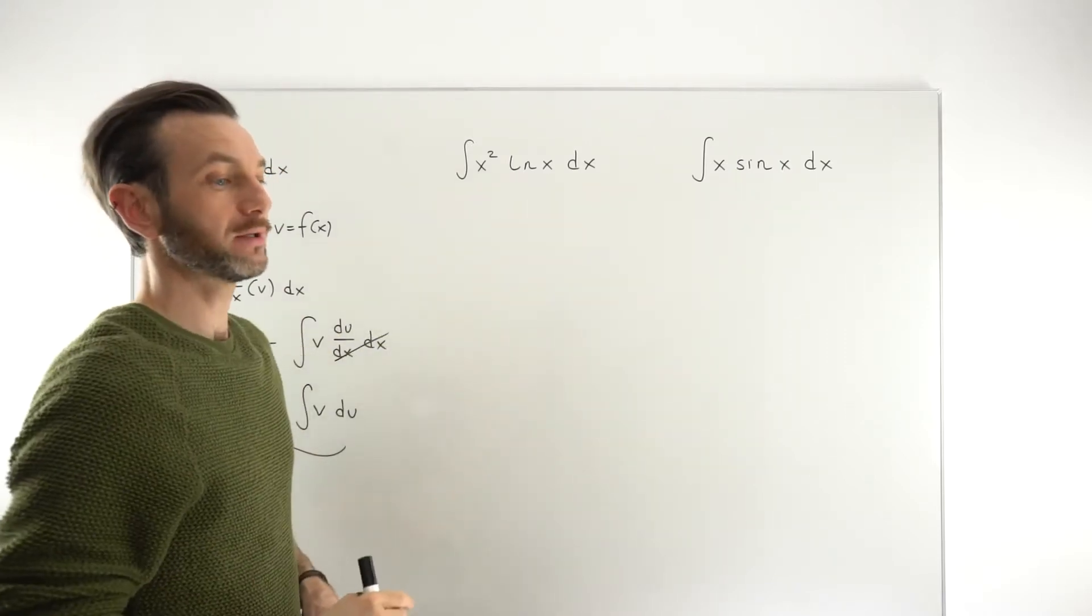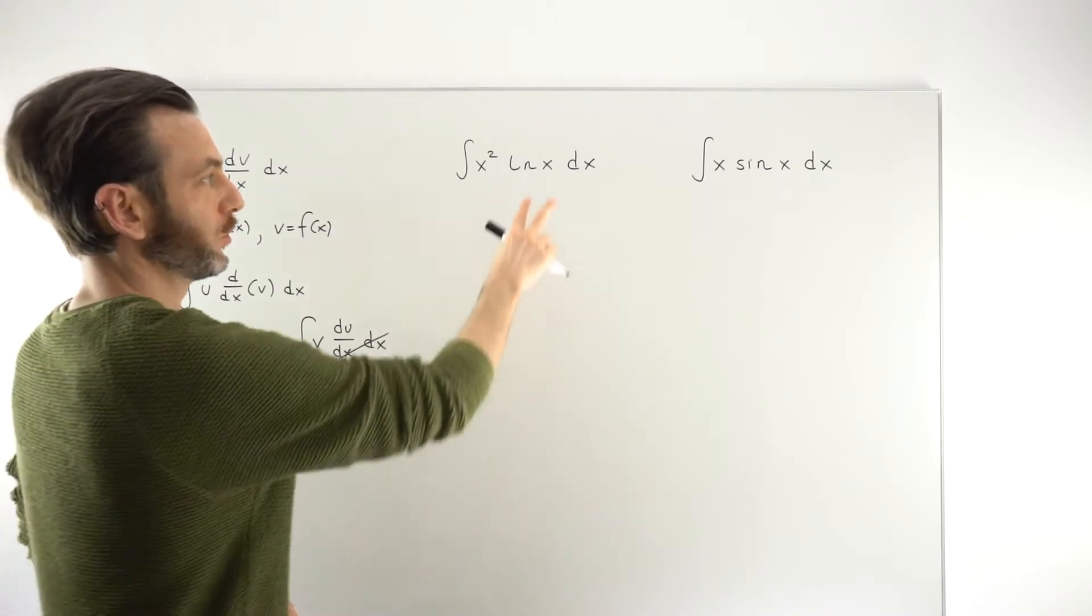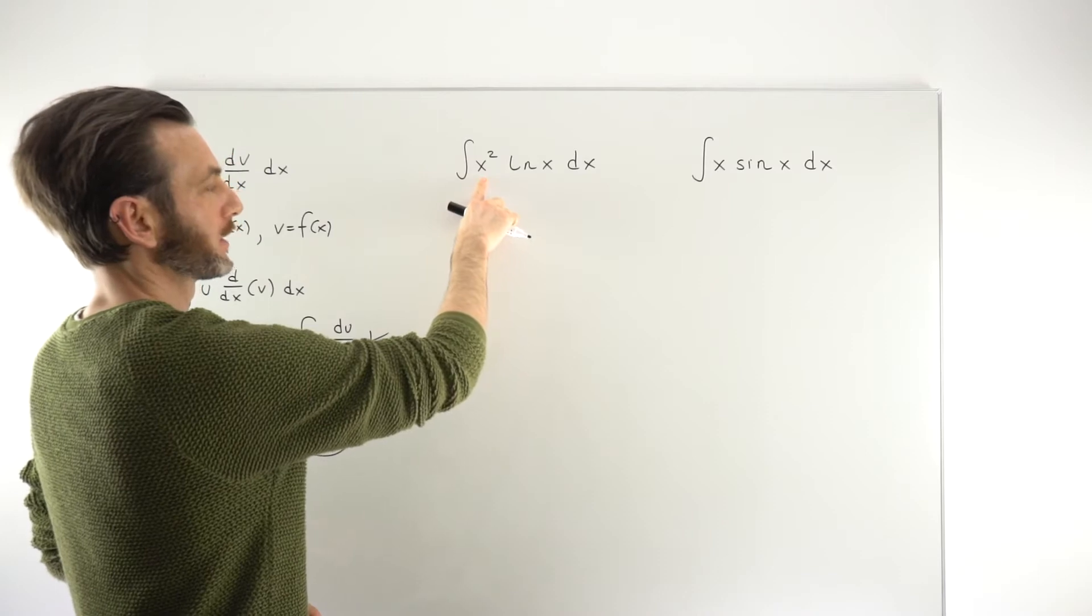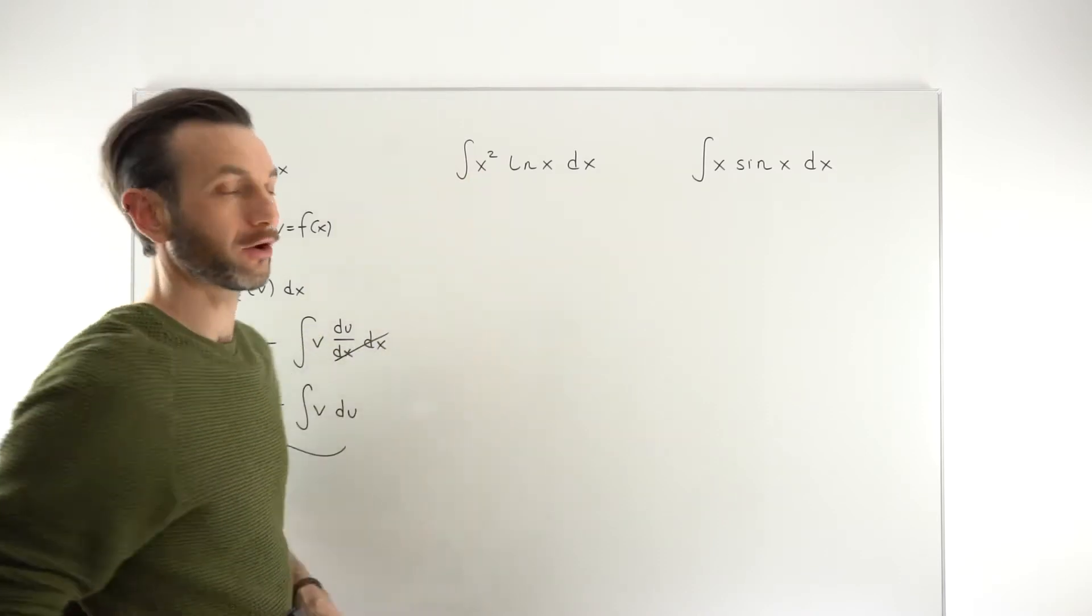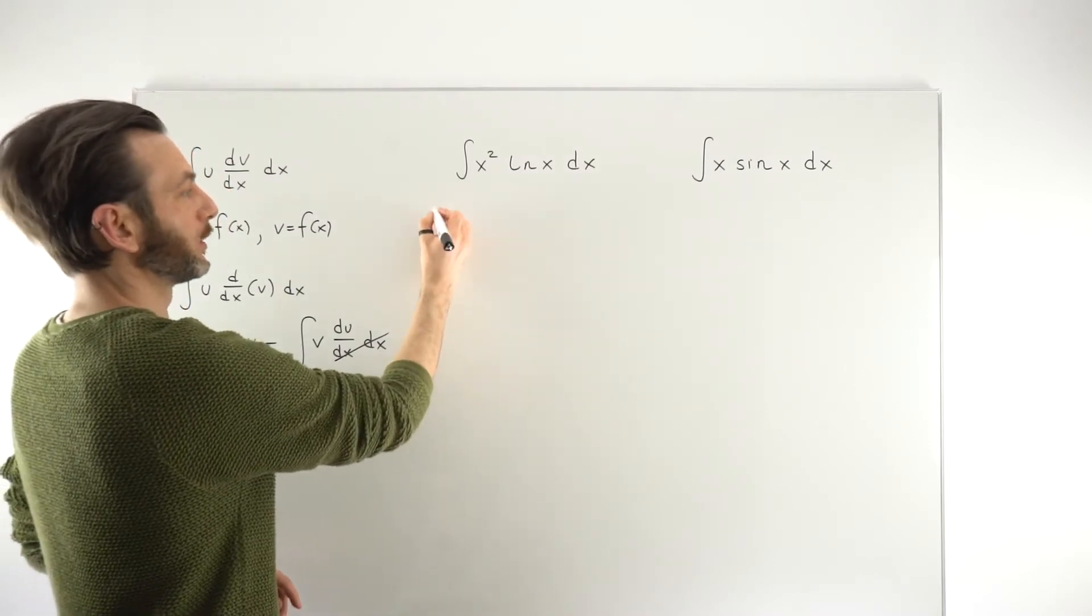Now, ln x is not easily integrated. So we're going to focus instead, this is not a common result, how to integrate ln x. So we're going to focus instead on making the x squared, our dv function, which means our u function would be ln x.